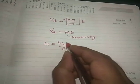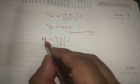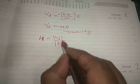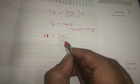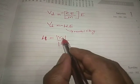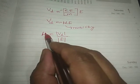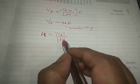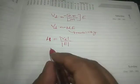We are taking the modulus — only the magnitude. Vd by E is defined as mobility. So the mobility of a conductor is defined as the drift velocity acquired by the free electron per unit electric field. Mu is equal to Vd by E, taking only the magnitude.